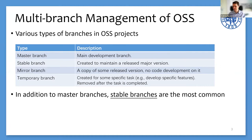The third type is the mirror branch — it is a copy of some released version. Unlike stable branches, there will be no code change on the mirror branch after it is created. The last type is the temporary branch, which is created for specific tasks and may be removed after the task completes. In addition to the master branch, stable branches are the most common type and play an important role in the software maintenance process.